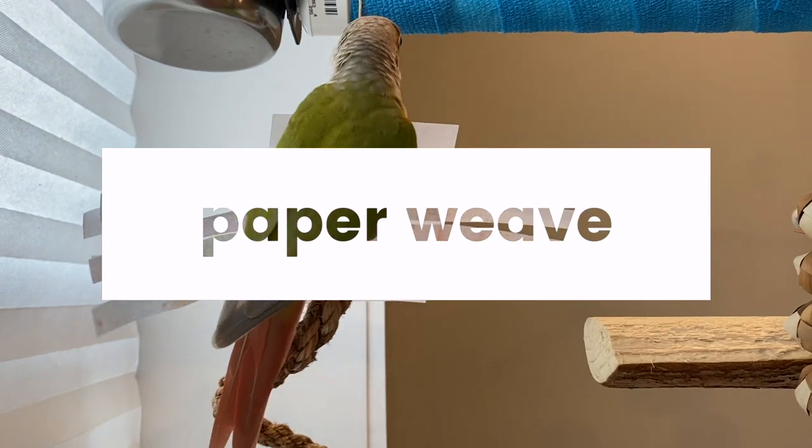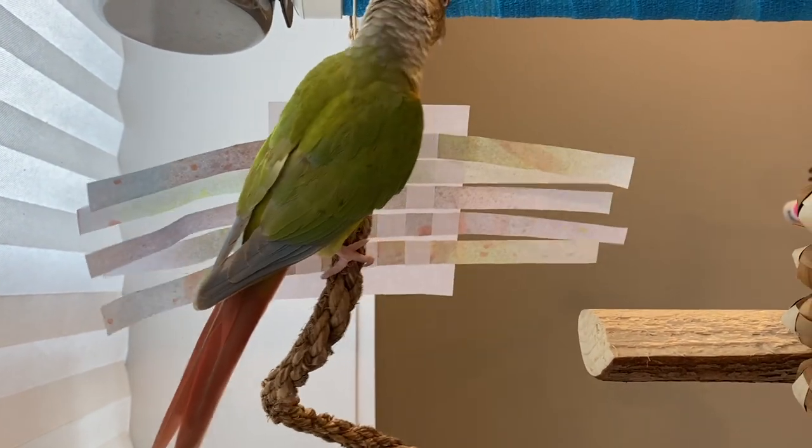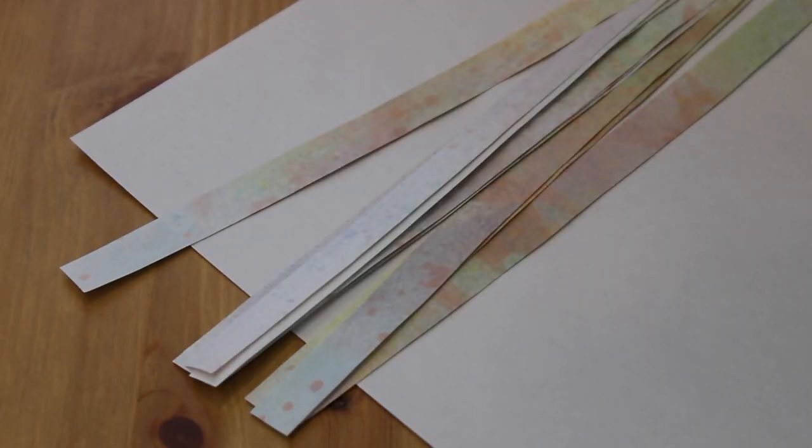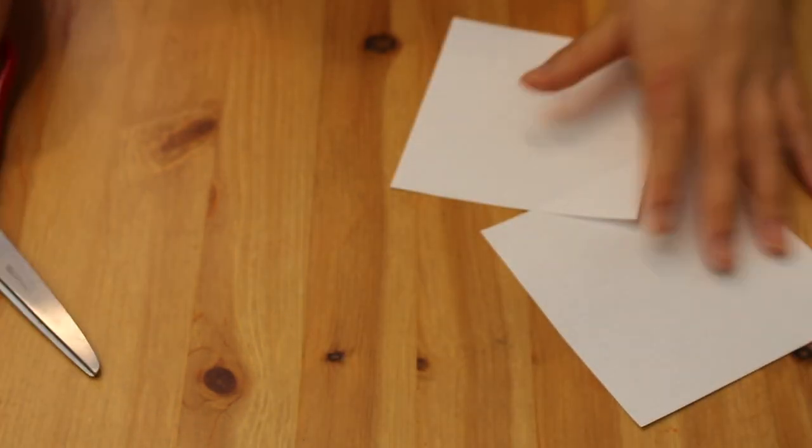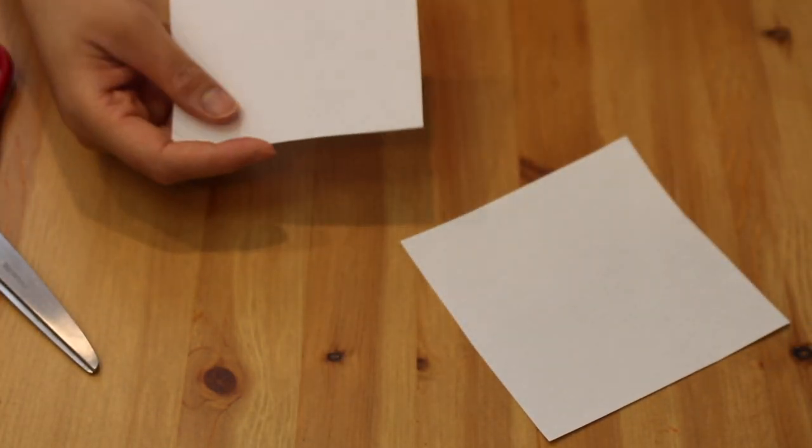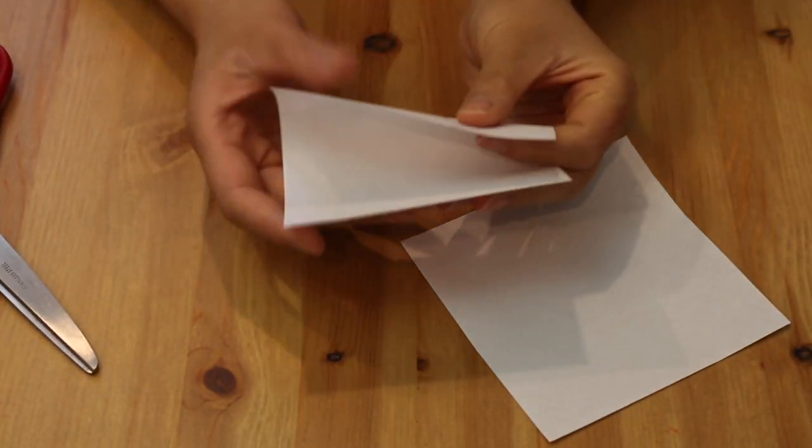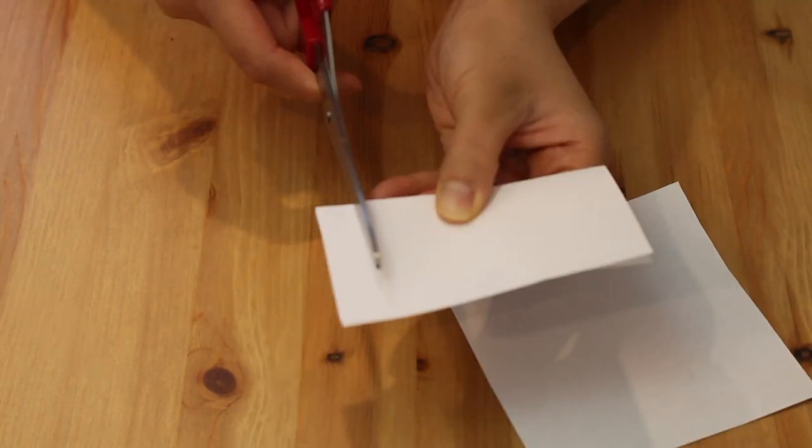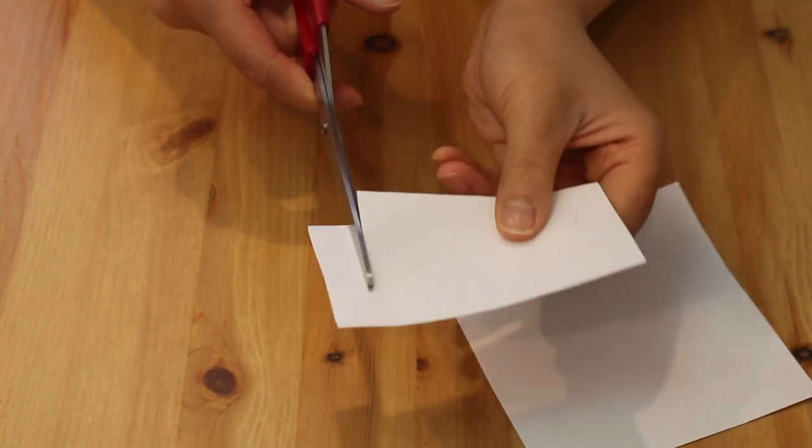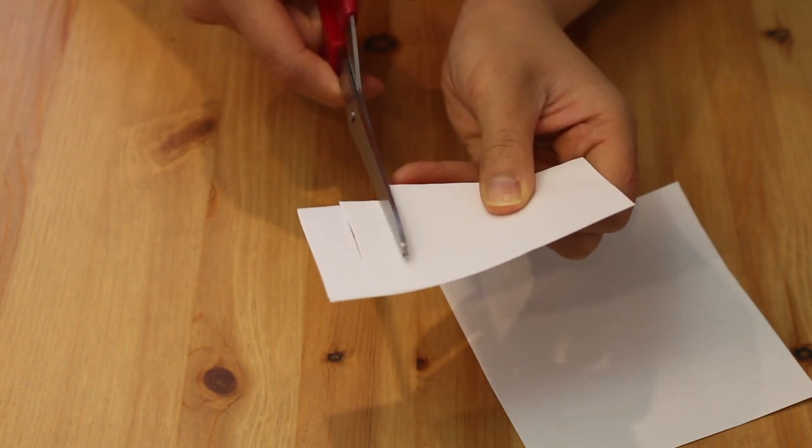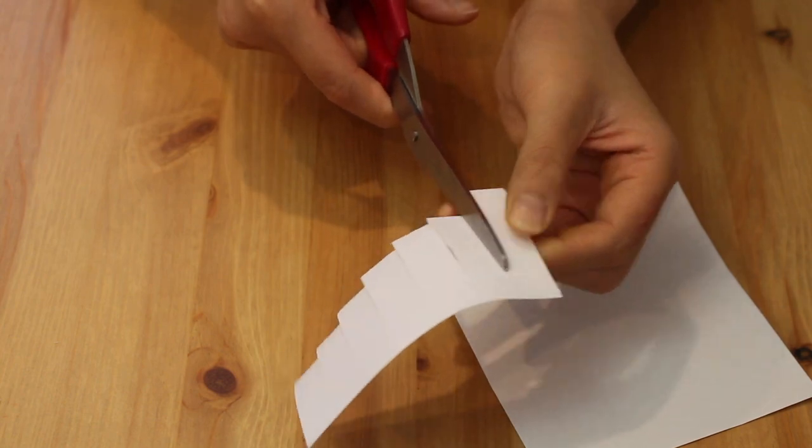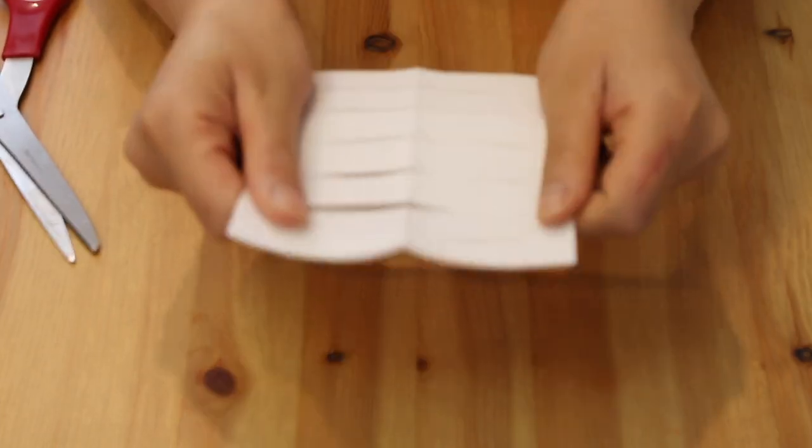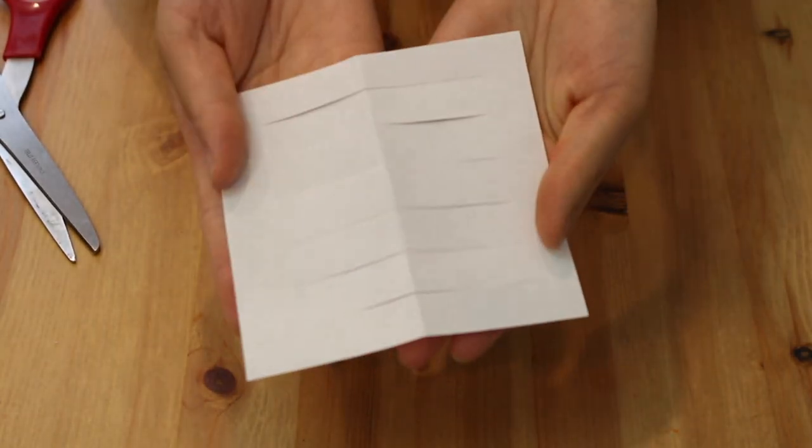Now this last toy is called a paper weave. You'll just need the strips of paper, a piece of white copy paper, and some scissors. So using your white copy paper, you want to cut out a square about four inches wide and four inches long, and then fold the square in half and use your scissors to cut lines into the paper about a half inch apart. You just want to make cuts into the paper, so be sure to leave about an inch of paper uncut all around the square, and then you can put this aside for a little bit.